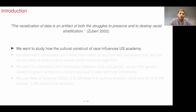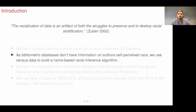I would like to start with a quote from Souvery that says that the racialization of data is an artifact of both the struggles to preserve and to destroy racial stratification. In this case, we want to do a quantitative analysis of authors in science in the US, where we are going to include a quantification of racialized data of race and gender. Because what we want to understand is how the cultural construct of race influences US academia, and as bibliometric databases don't have information on authors' self-perceived race, we first need to build a name-based racial inference algorithm, which is going to be based on family names and census data.